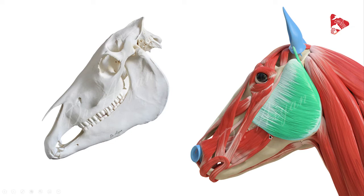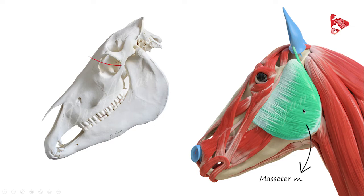Now let's talk about the other muscles visible in the lateral view. We can see this very large muscle called the masseter muscle. The masseter is one of the mastication muscles and normally has two parts in the horse: the superficial and the deep part. This muscle originates from the zygomatic arch and from the facial crest.